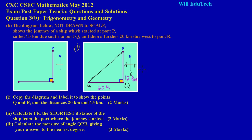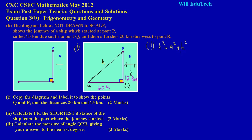Since we have a right angle triangle with two known sides, we can use Pythagoras' theorem to find the missing side. The side opposite the right angle is the hypotenuse, which I'll call H. Pythagoras' theorem states: H² = a² + b².